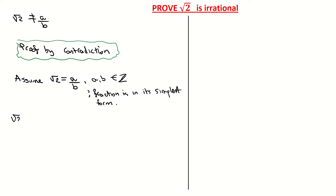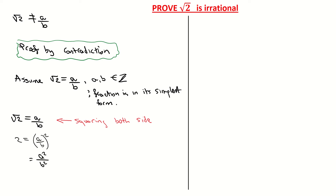So we're assuming the square root of 2 equals the fraction a over b. I'm going to get rid of that square root by squaring both sides, which gives me 2 = a² over b². Then doing cross multiplication, I get 2b² = a².